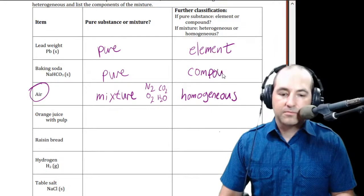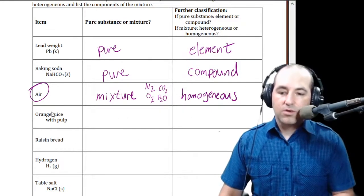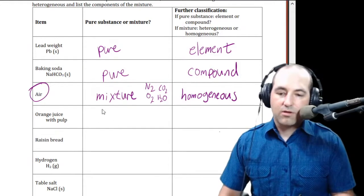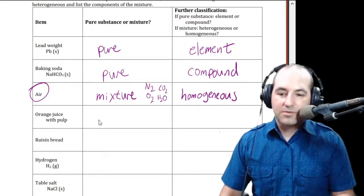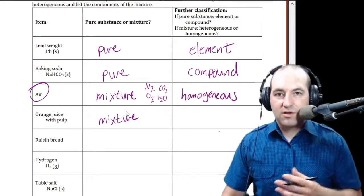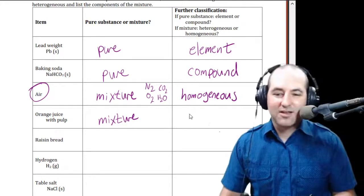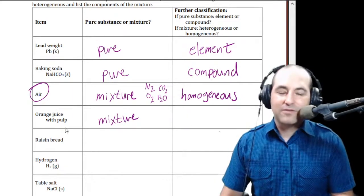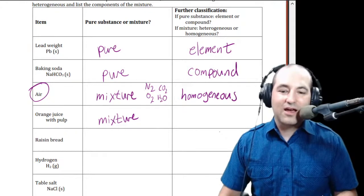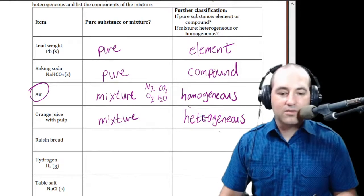Orange juice with pulp — you can probably figure out that is not a pure substance; that's going to be a mixture. There are lots of different types of compounds in orange juice: sugar, color, flavors, water, vitamin C, whatever else. And since it's specified that it's with pulp, that's really our hint that this is a heterogeneous mixture — we can see the pulp as being separate from the rest of the orange juice.